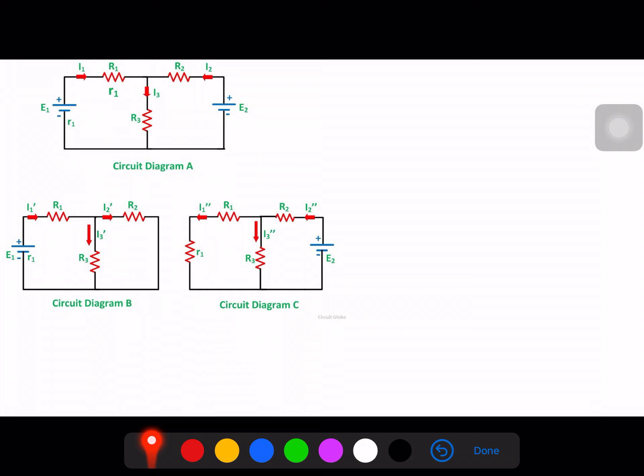So if we want to use superposition theorem to say find I3, you can use it to find any current - the process will remain same. First step will be to consider one source. So let us go to circuit diagram B and we are going to consider only E1 here. Now since we have a second source also E2 in the main circuit, we will have to remove or replace it by its internal resistance. So as you can see in circuit diagram B, E2, since it's a voltage source, it has been replaced by a short circuit. Or we can say since E2 is a voltage source and its internal resistance is zero, there is no internal resistance of this voltage source. So that is why it has been replaced by a resistance of zero. Resistance of zero means short circuited.